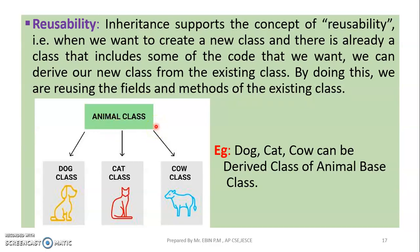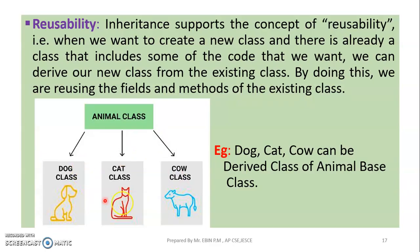In inheritance, we have a base class — also called the super class or parent class. For example, consider an Animal class. This is the base class. The subclasses — also called child classes or derived classes — are Dog, Cat, and Cow. These inherit from the Animal base class.